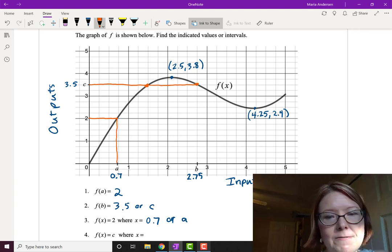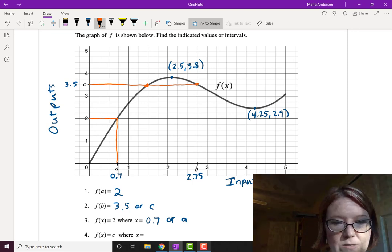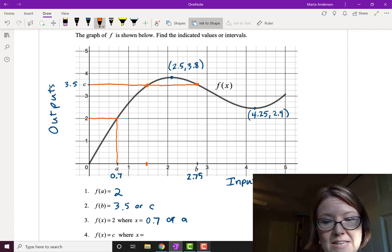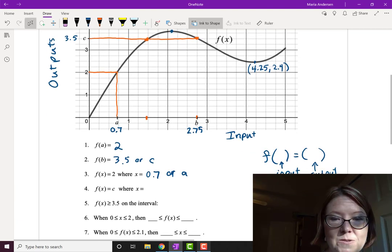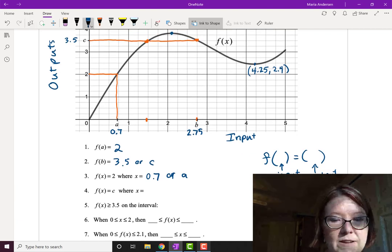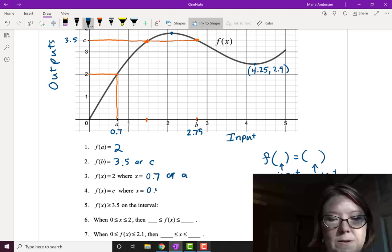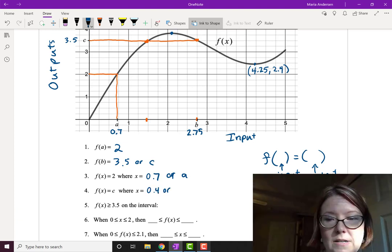It hits the graph at about 0.4 and it hits the graph again at the value of b or 2.75. So there's actually two answers here. We could say f of x equals c where x equals 0.4 or 2.75.